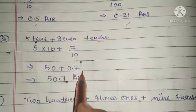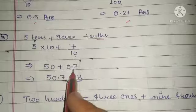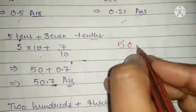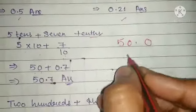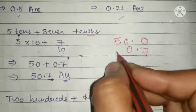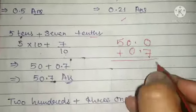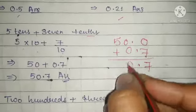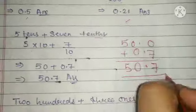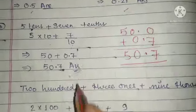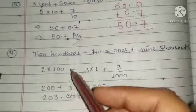We add 0.5 and 0.7 together. So our answer will be 1.2 at the decimal place. The next question has 200 plus 3 ones plus 9 thousandths.